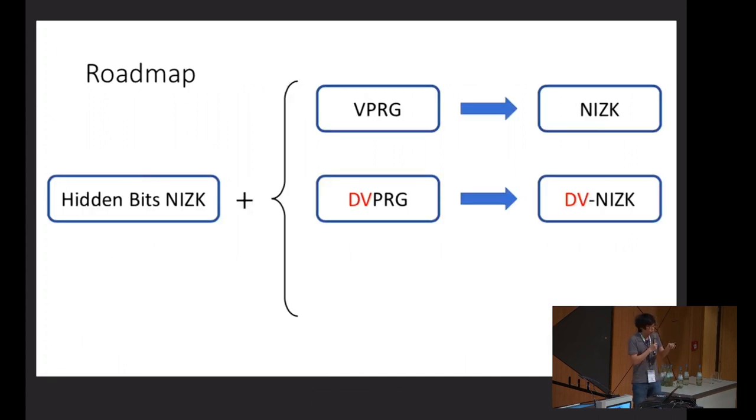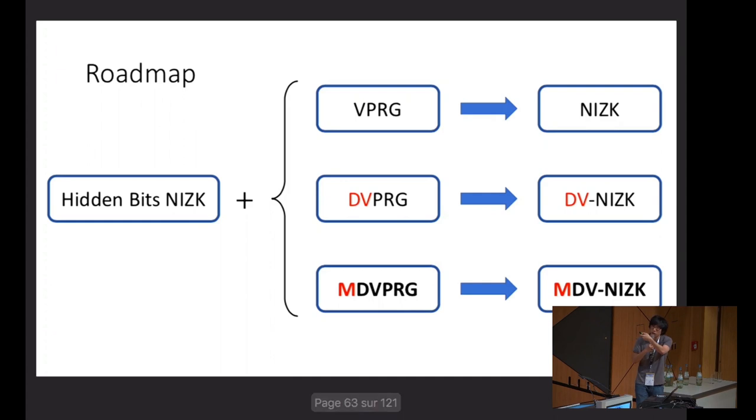The roadmap will follow pretty much closely what Geoffrey talked about. Geoffrey just showed that if we start with a VPRG, you get NIZKs. And if you start with a designated verifier version of PRGs, you get a DV-NIZK. So naturally, what I'll focus on onwards is the malicious version and show that that suffices for NIZKs and how to build a malicious MDV-PRG.